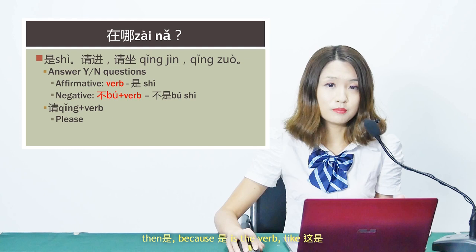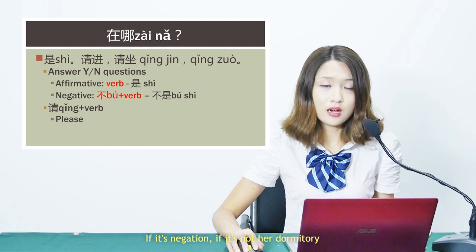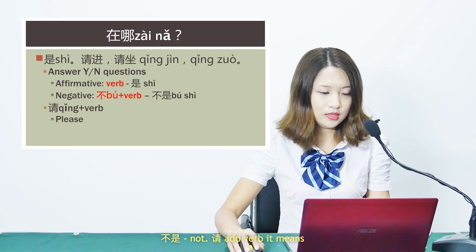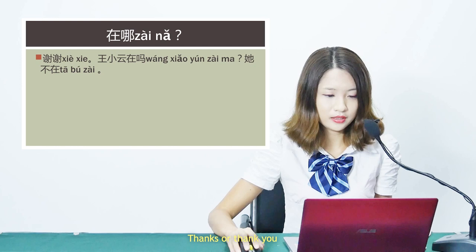To answer yes/no questions: if yes, use 是, because the verb here is 是. For example, 这是王小云的宿舍吗? — Is this 王小云's dormitory? If negation, say 不是. And 请 followed by a verb means please do something. 下一句 — next sentence. 谢谢 — thanks, or thank you.